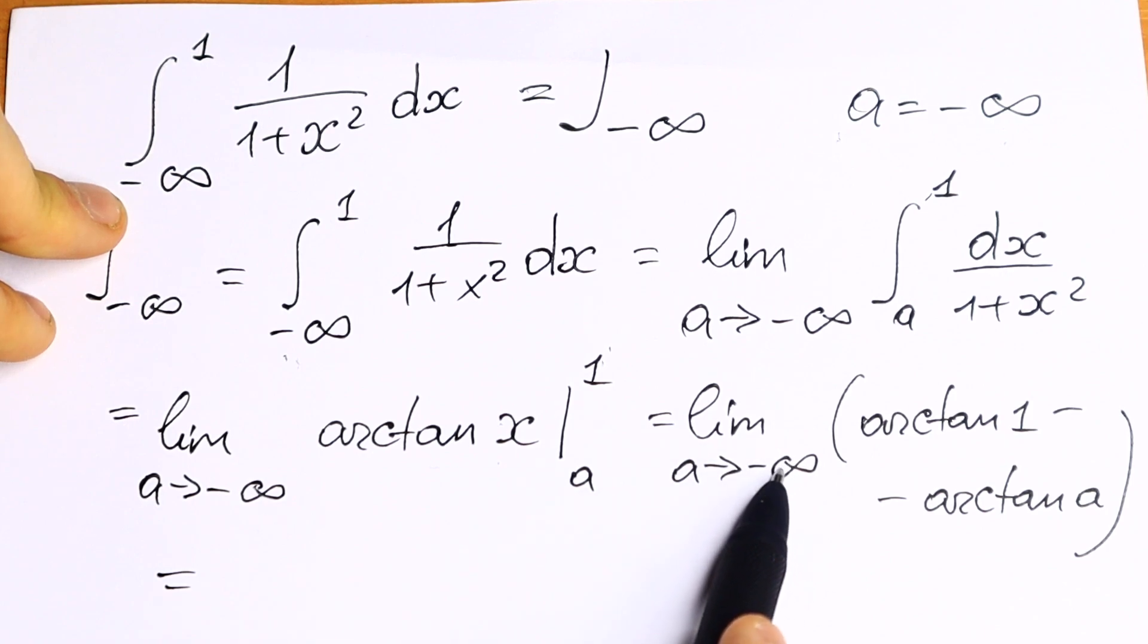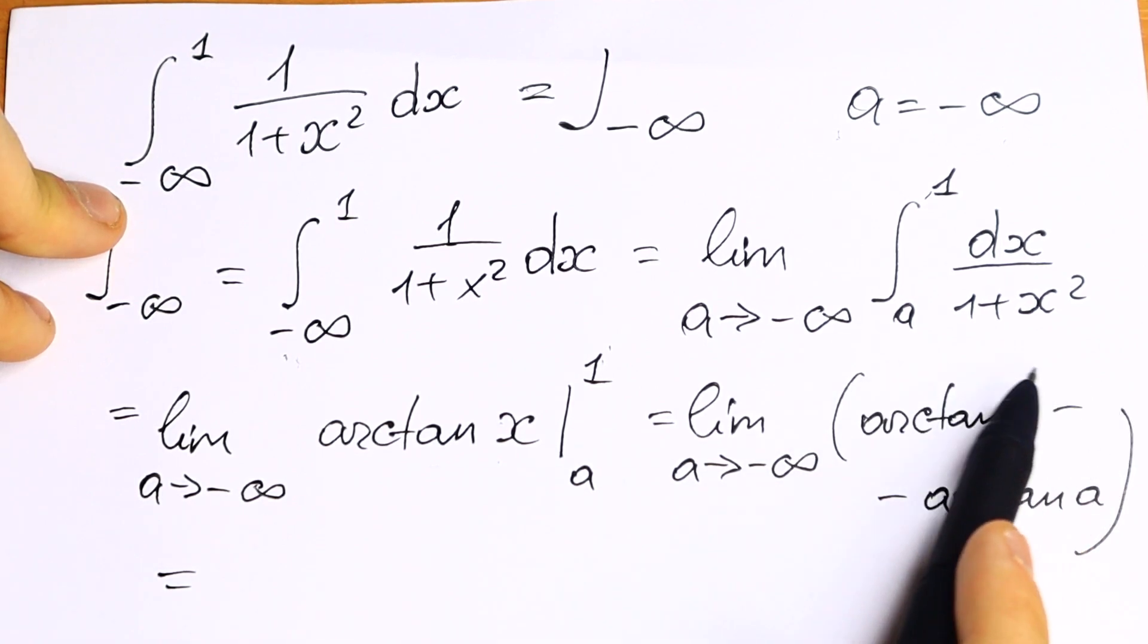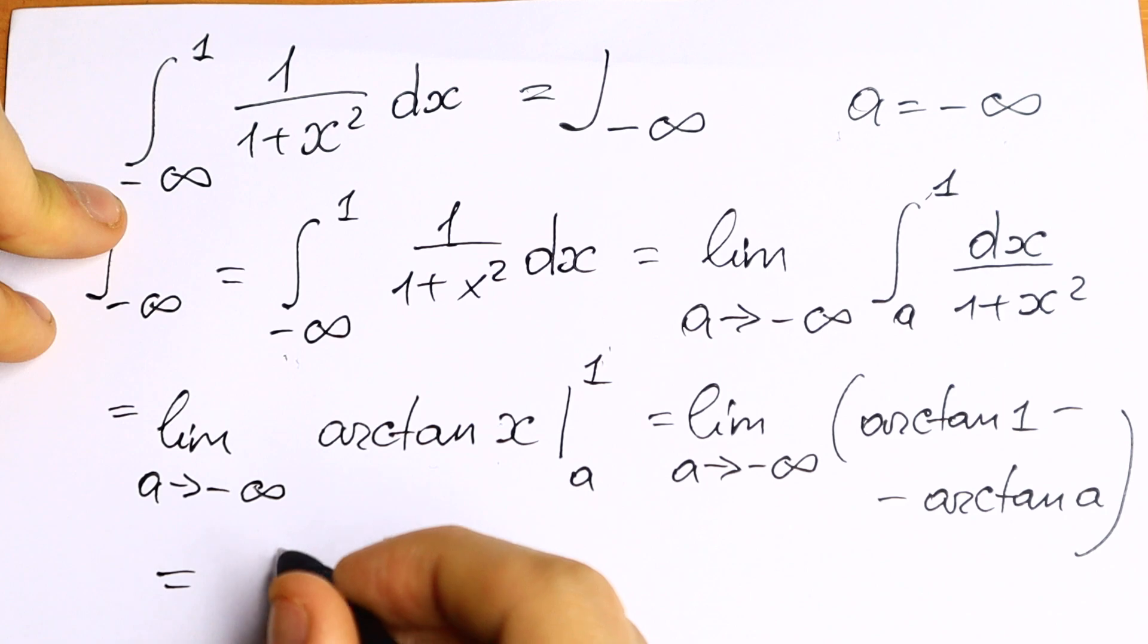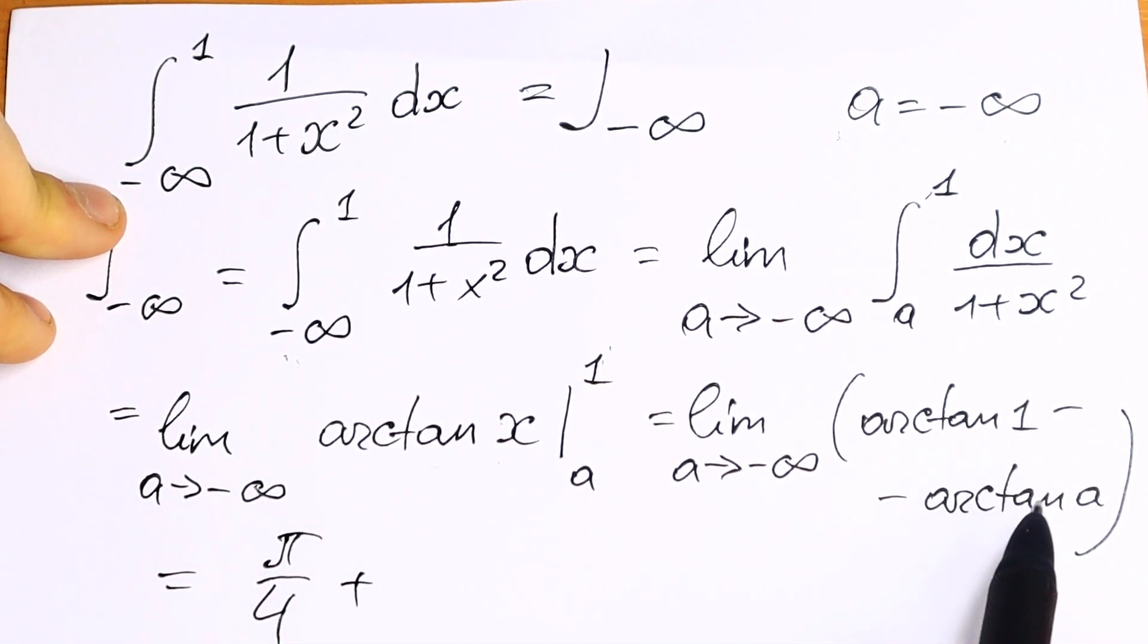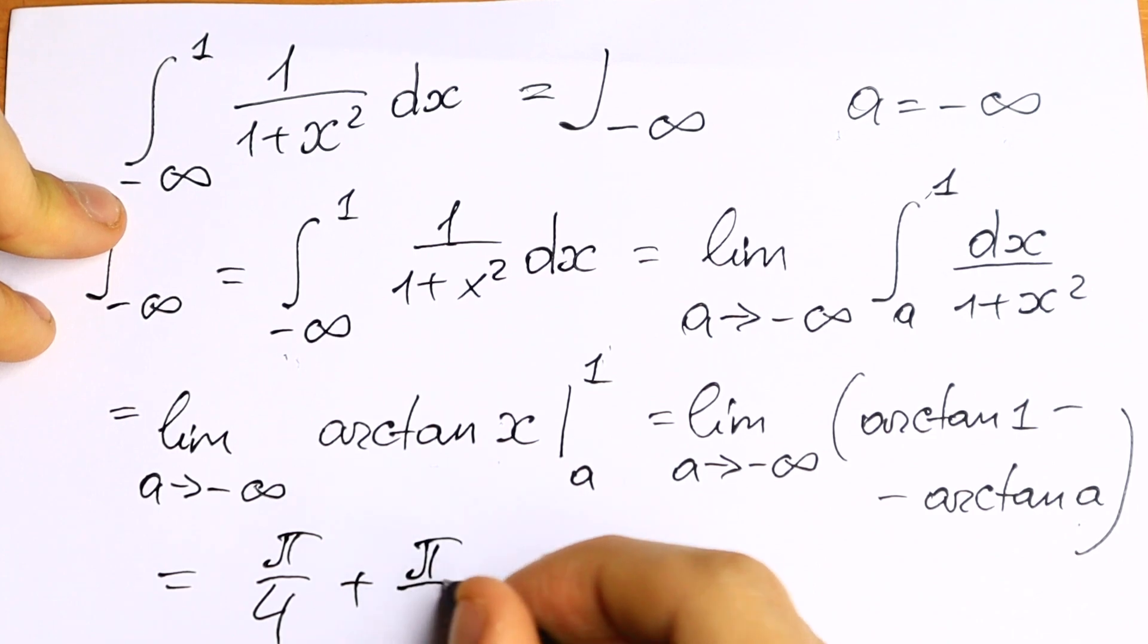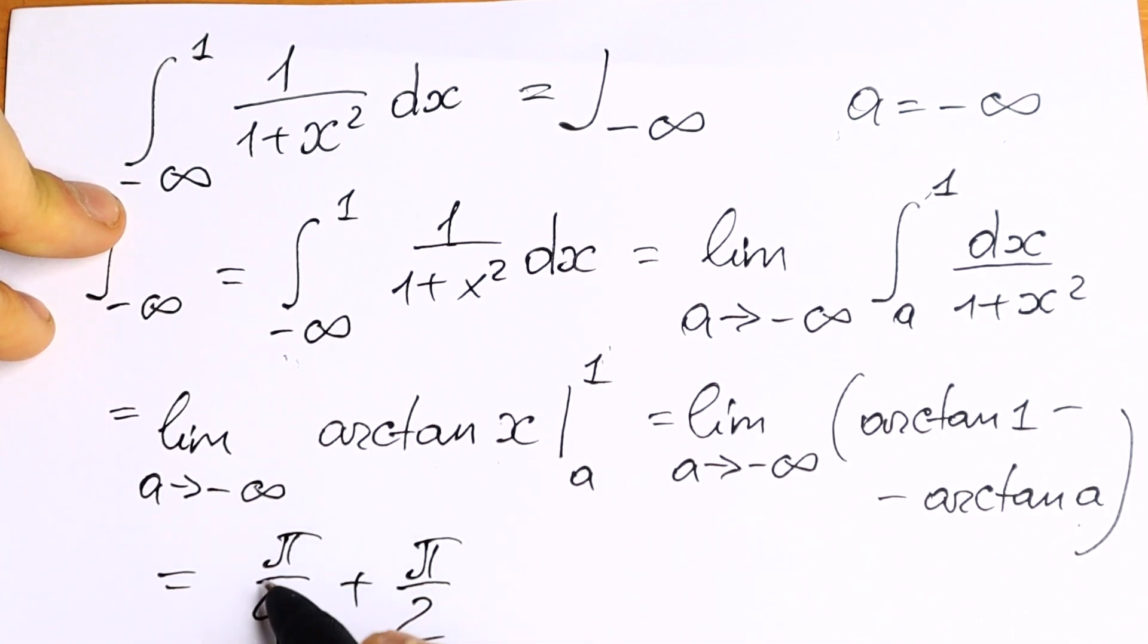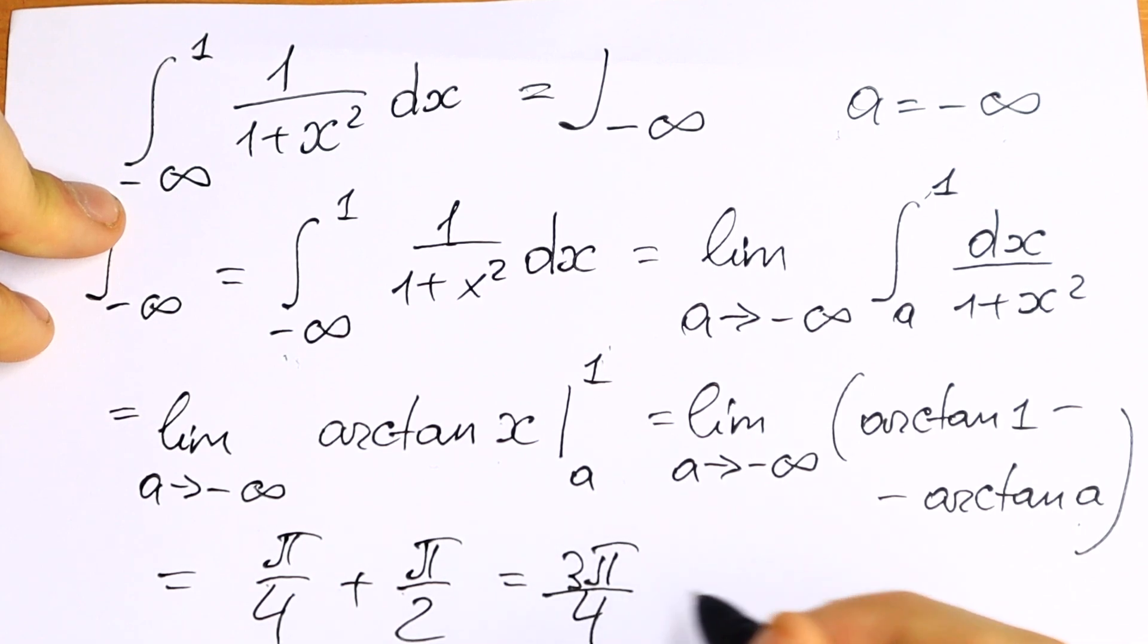So if you're talking about the limit, this is a constant. We all know this will be equal to pi over 4. And if you plug in arctangent of minus infinity, it will be negative pi over 2. And if you add this, we will have 3 pi over 4.